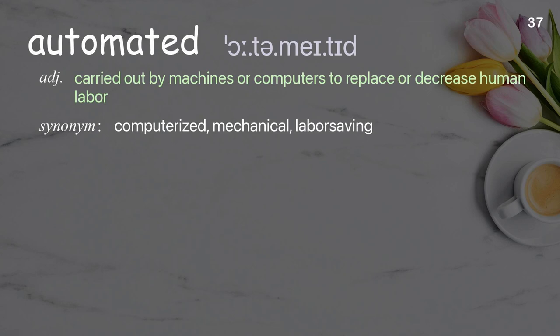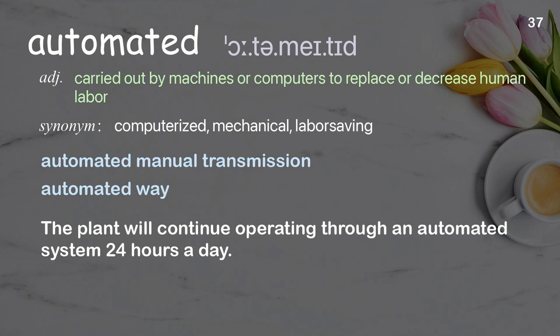Automated: carried out by machines or computers to replace or decrease human labor. Examples: automated manual transmission, automated way. The plant will continue operating through an automated system 24 hours a day.